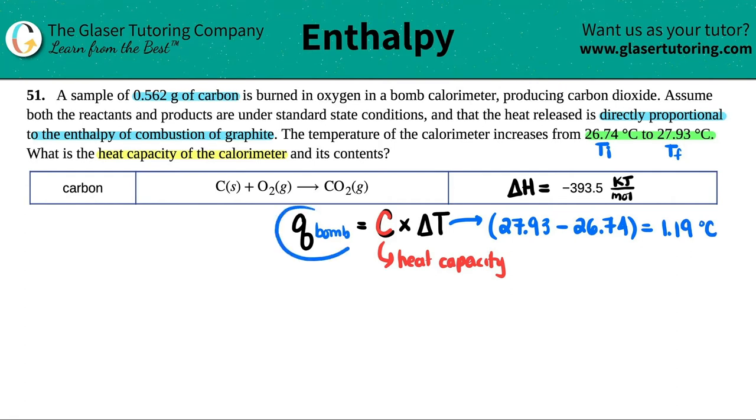Now let's work on this part. I need to find out how much heat was produced in the bomb. They did tell me that we had a sample of 0.562 grams of carbon, so that's going to be important. And they said that the heat released is directly proportional to the combustion of graphite. So what I did was I went into the textbook and I found out the delta H, the enthalpy, which is delta H of the combustion of graphite. This carbon is the graphite version, not diamond. So when graphite combusts, you will release negative 393.5 kilojoules per mole.